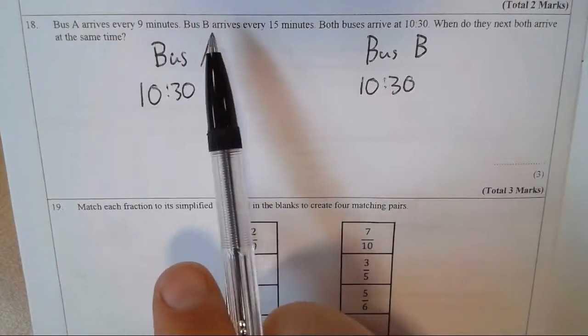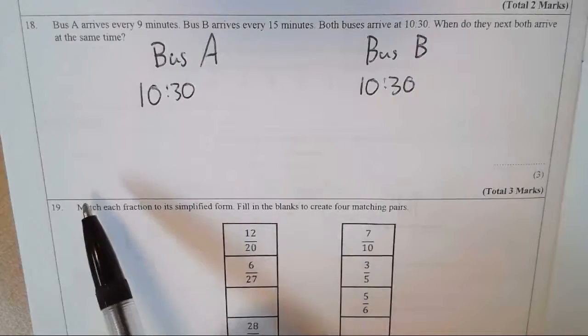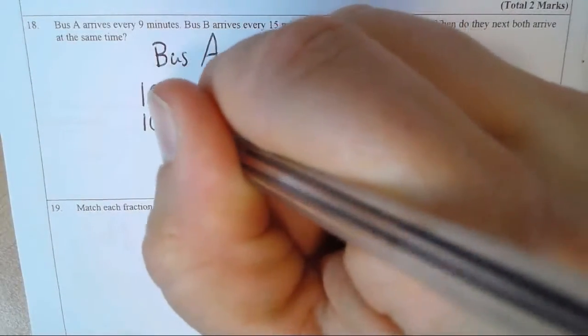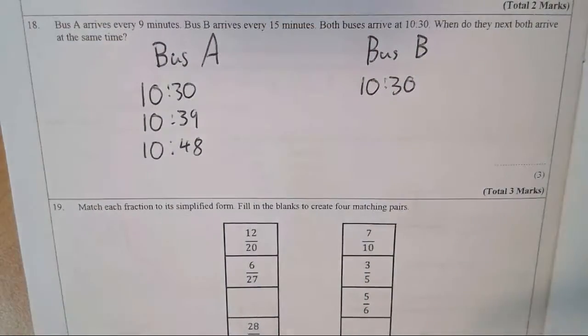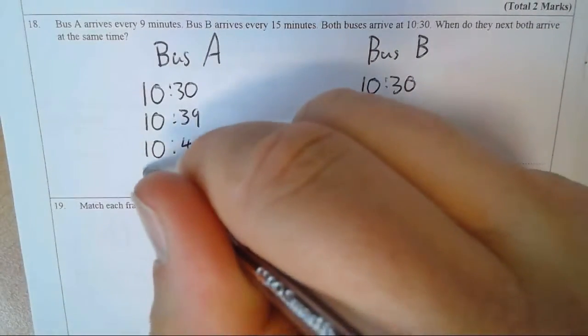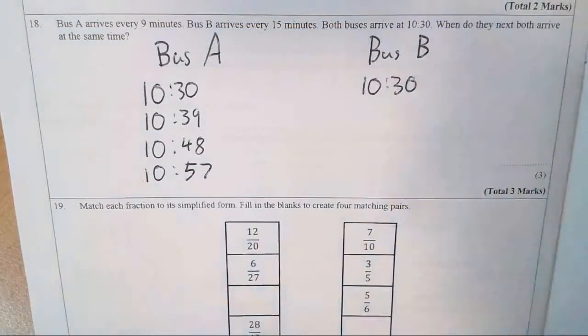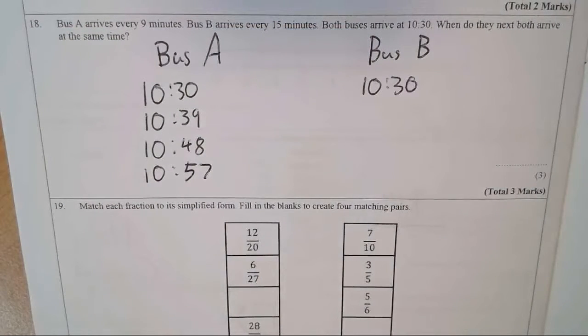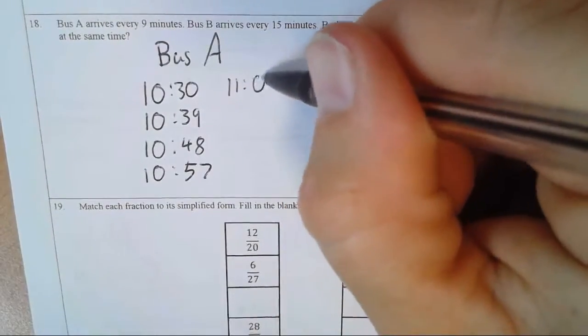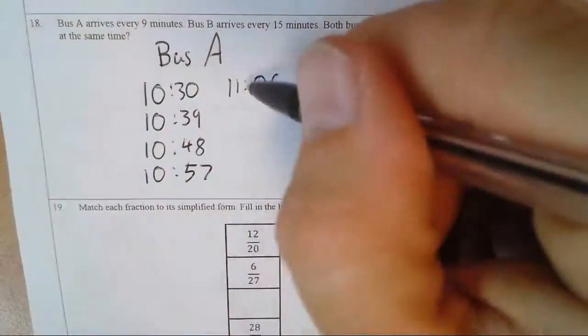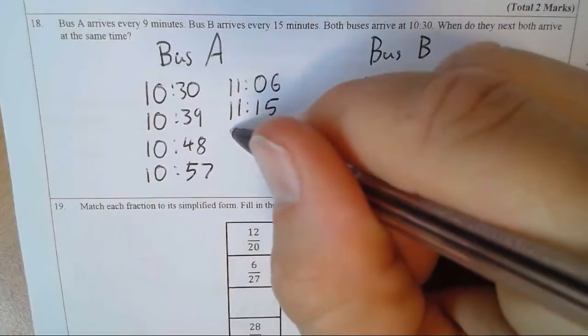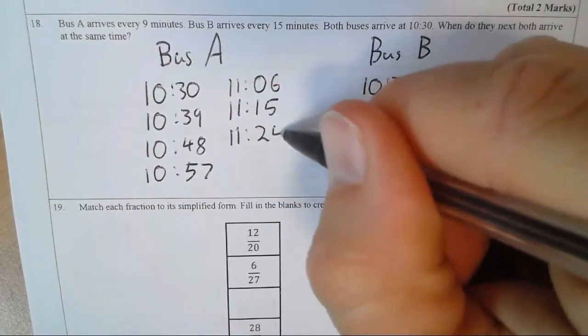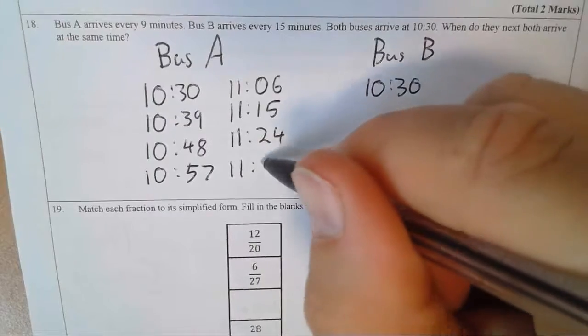Then, Bus A arrives every 9 minutes. So let's list some out. It arrives at 10:30. It will next arrive at 10:39, then 10:48. Let's keep going. It will next arrive at 10:57, then 9 minutes after that is 11:06. It will next arrive at 11:15, and so on. I'll do a couple more: 11:24, 11:33.